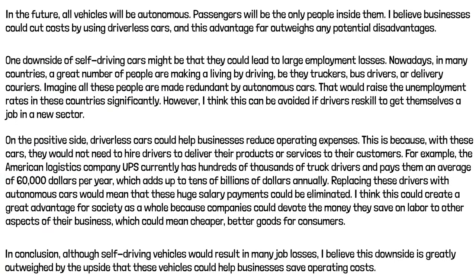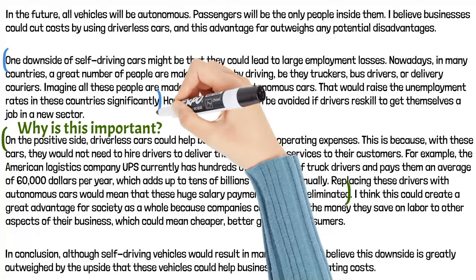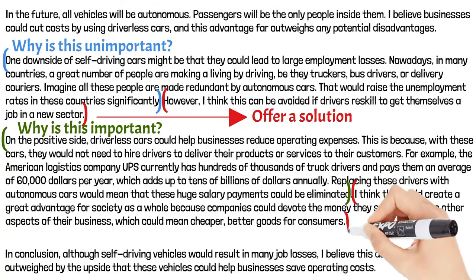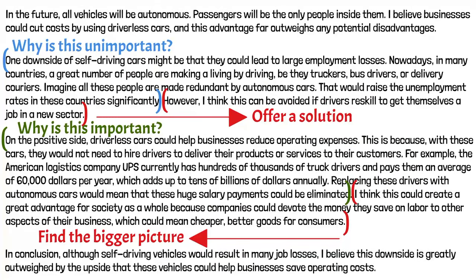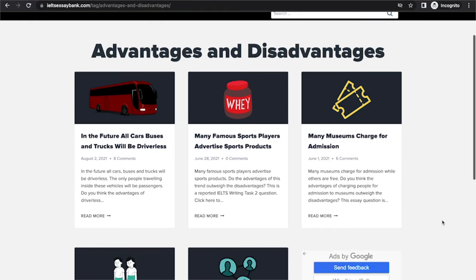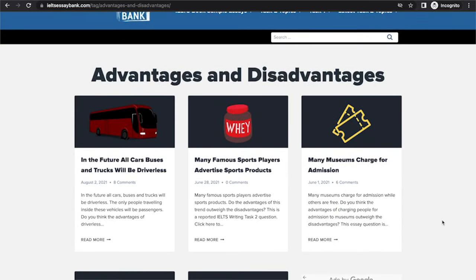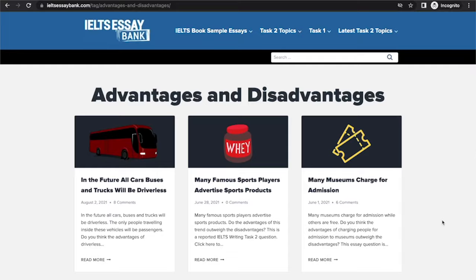I think the hardest part of this type of essay is to explain why the side that you agree with is important and the side you disagree with is unimportant. In this video, I shared one method — offer a solution and find the bigger picture. But you shouldn't expect to use only one method for all 'advantages outweigh disadvantages' questions. I've published five essays of this type on my blog — the link is in the description. Definitely go check them out so you can have more flexibility when answering this type of question.